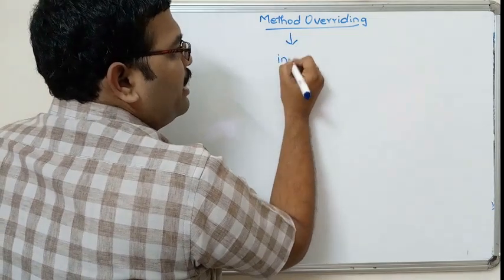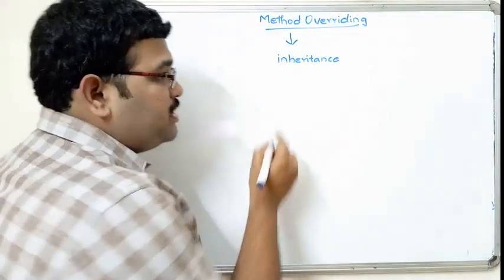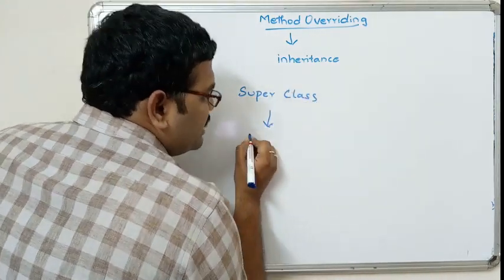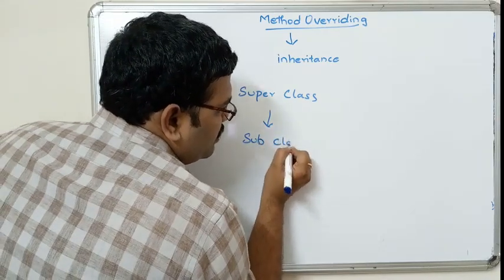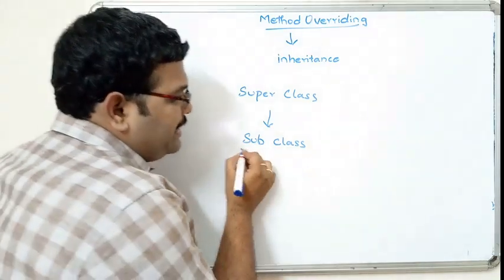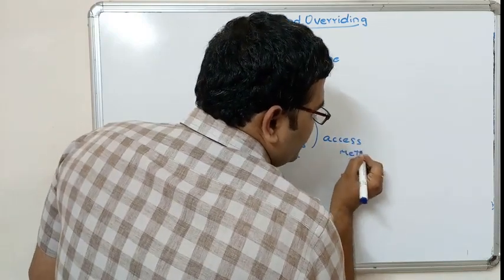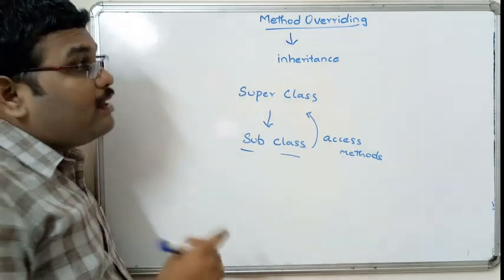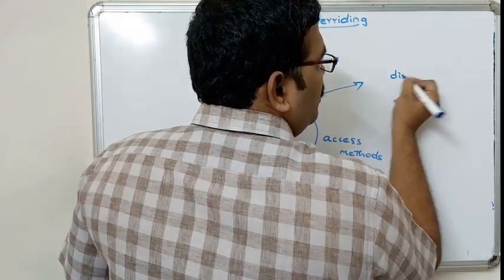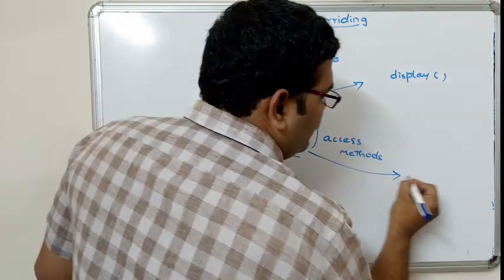Method overriding is implemented in inheritance. We know that in inheritance there will be one superclass, and from this superclass a subclass extends the properties. So this subclass can acquire the properties and access the methods of a superclass. For example, we are writing the method display in this superclass, and the same method will also be written in the subclass.